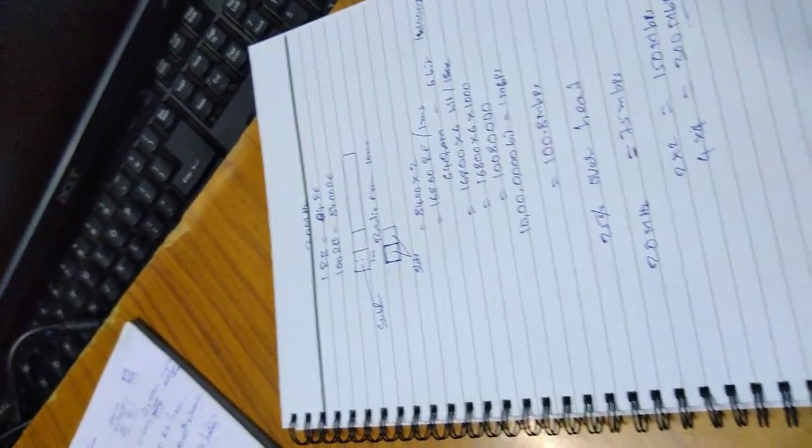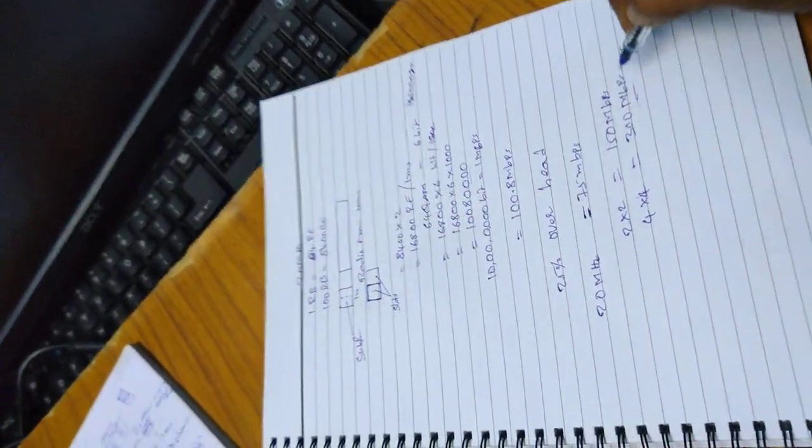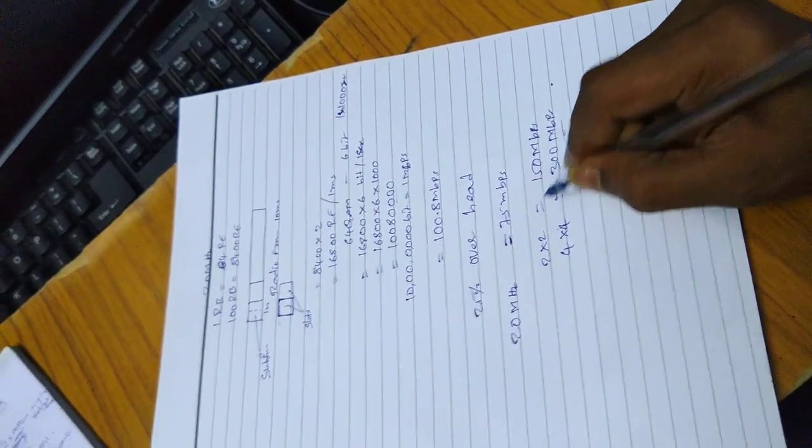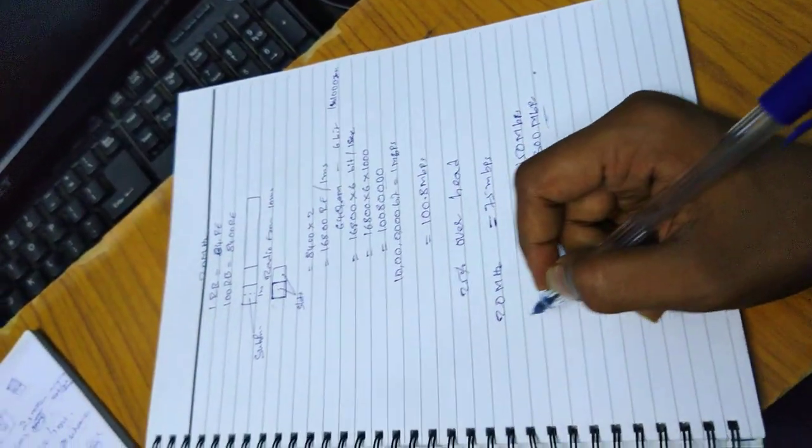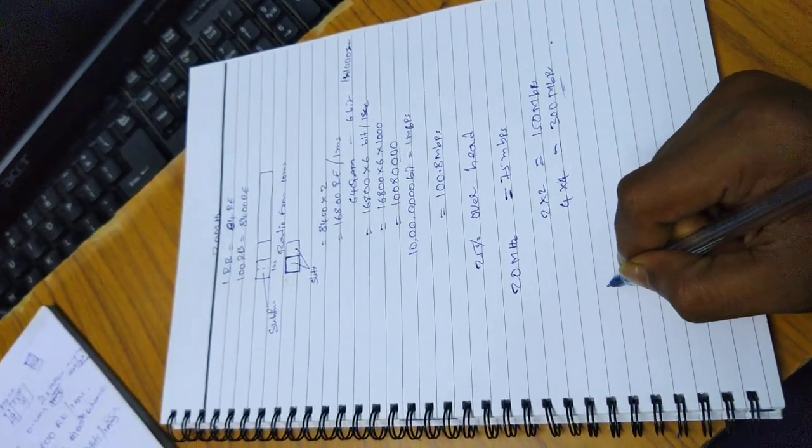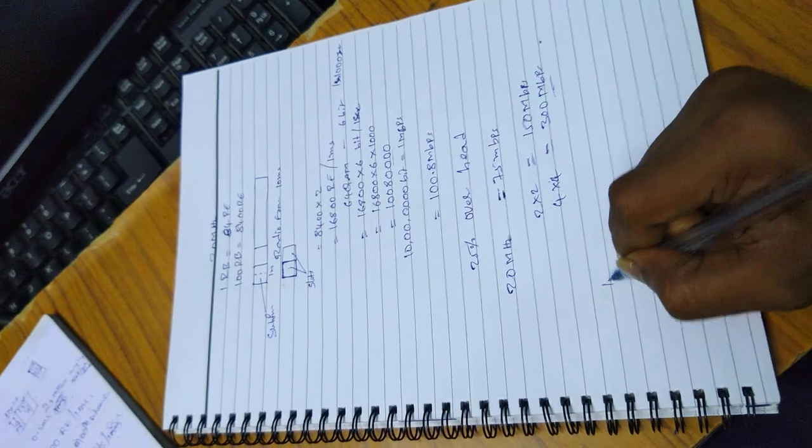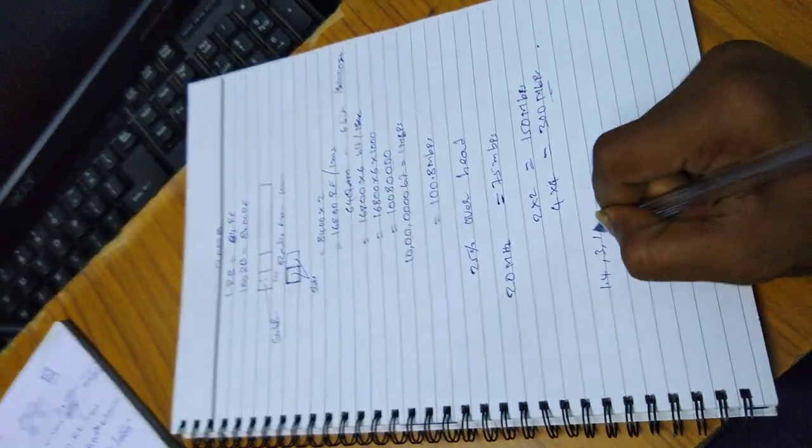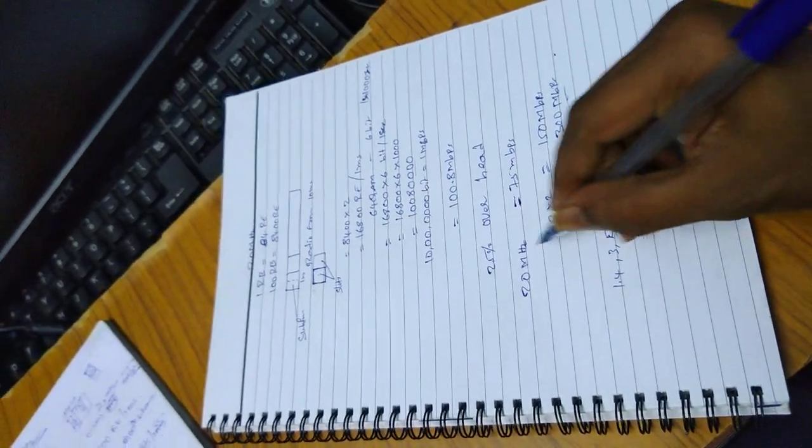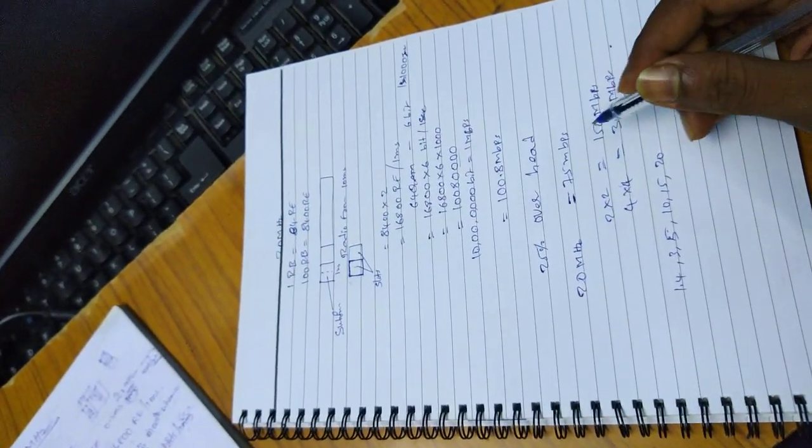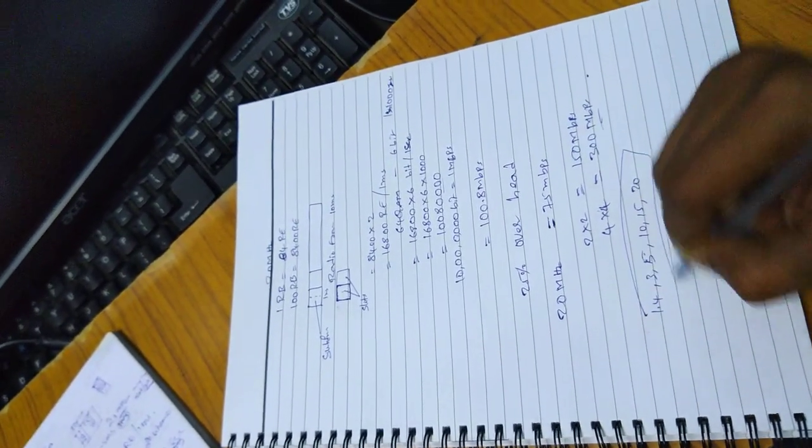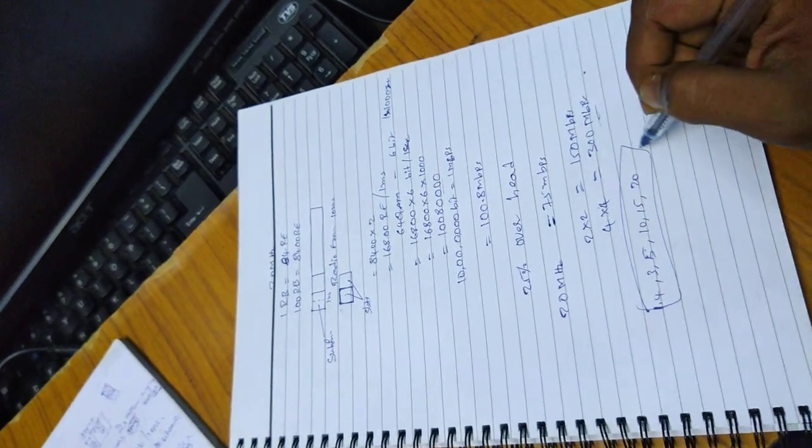We can calculate like this. This is the calculation for resource blocks and throughput. We have LTE bands like 1.4, 3, 5, 10, 15, and 20 MHz. I just calculated for 20 MHz. In the same way, you can calculate for all bandwidths. Thank you for watching.